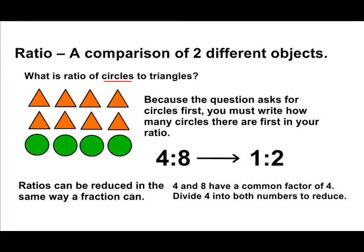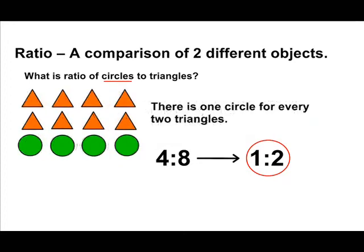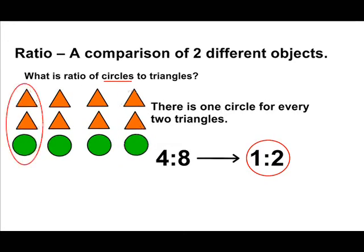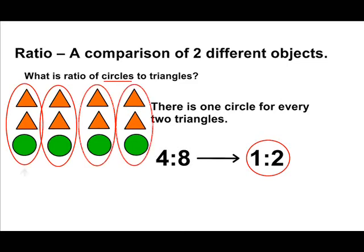What that means is we could say that there is one circle as compared to every two triangles. And if we separate our objects into four distinct groups, we can see that this is a true statement — in each group, there is exactly one circle for every two triangles. So remember, when setting up a ratio, you must look at the first object given in the problem and write that number first, then the second object is written second, and always reduce your ratio whenever possible.